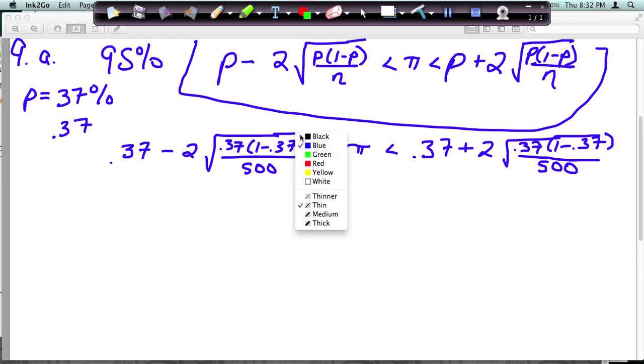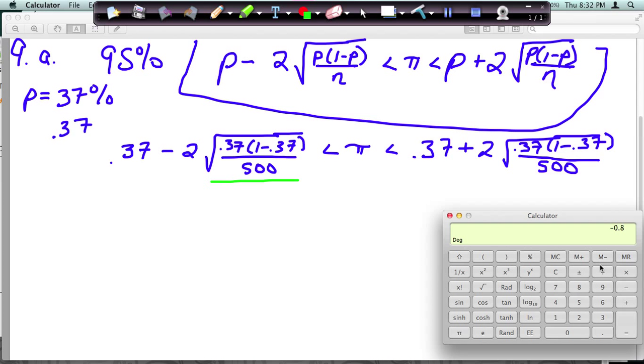So we need to solve this. So the first thing I want to deal with is this right here. So I'll get out, this is a pretty basic calculator on here, but I'll get it out and clear this. So I'm going to do, first I'm going to do the 1 minus 0.37. Multiply that by 0.37. Divide by 500. And you have to, because this is a basic calculator, so my order of operations is a little bit different. And then I'm going to take the square root. And then the last thing we need to do, that's the radical sign, it says multiply by 2.